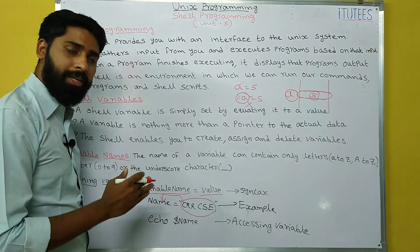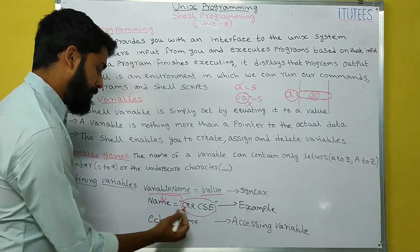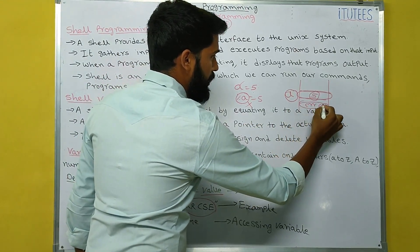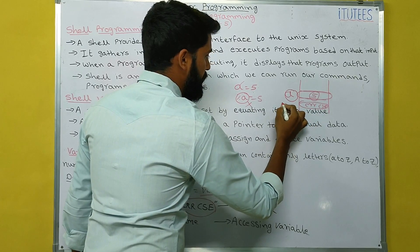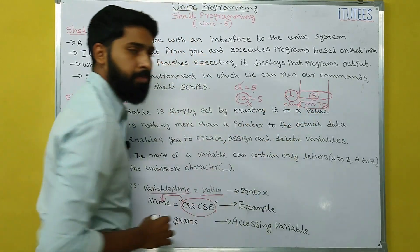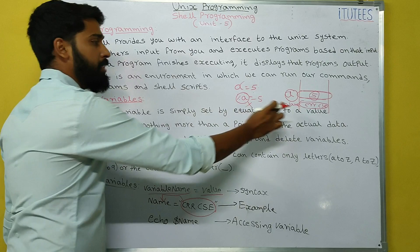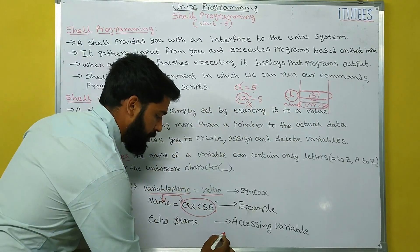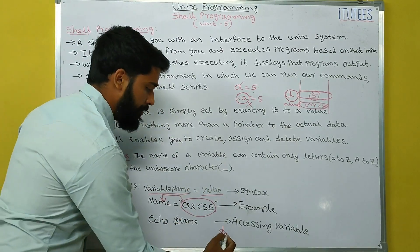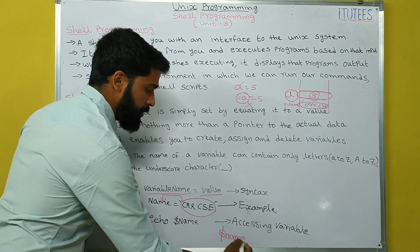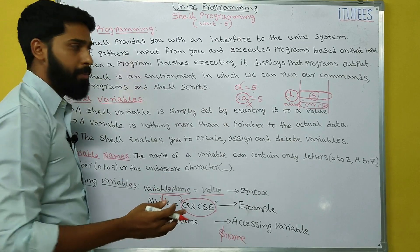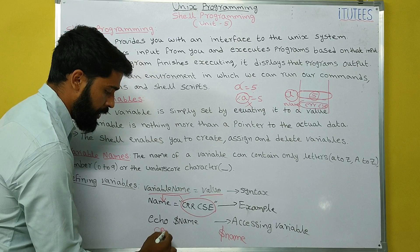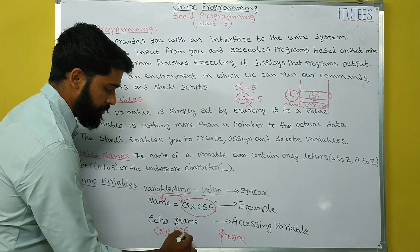Now we are going to access the content in the variable. name equals to CRRCSC means CRRCSC is stored in that storage location and the variable name is name. How can we access this content through the variable name? By using the dollar symbol — dollar followed by the variable name. So dollar name means the content CRRCSC. echo dollar name prints CRRCSC.